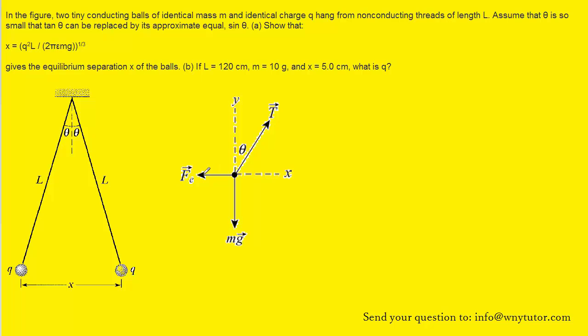And then we have the electrostatic force that's pointing to the left. Notice that it is pointing to the left because the question noted that the two conducting balls have identical charge. So if they have identical charge, that means they're going to repel one another by an electrostatic force. So the ball on the left would be pushed to the left, and that is why we have indicated that force pointing to the left.